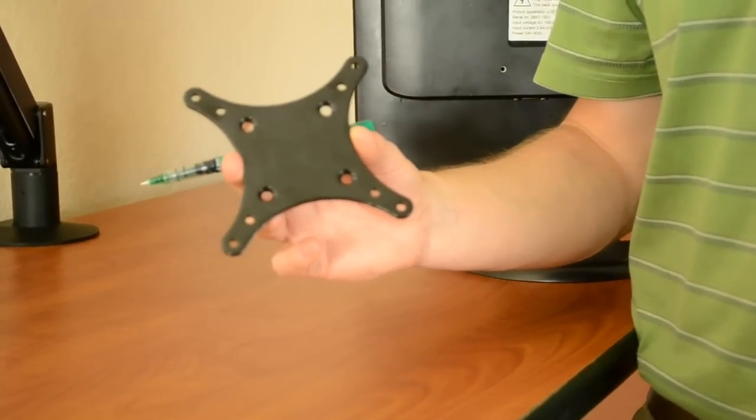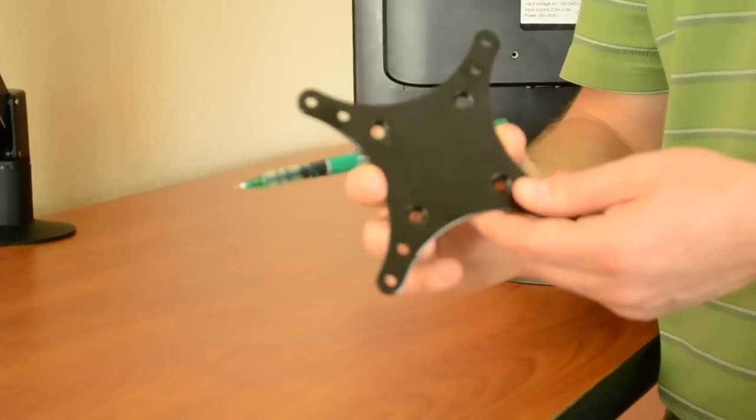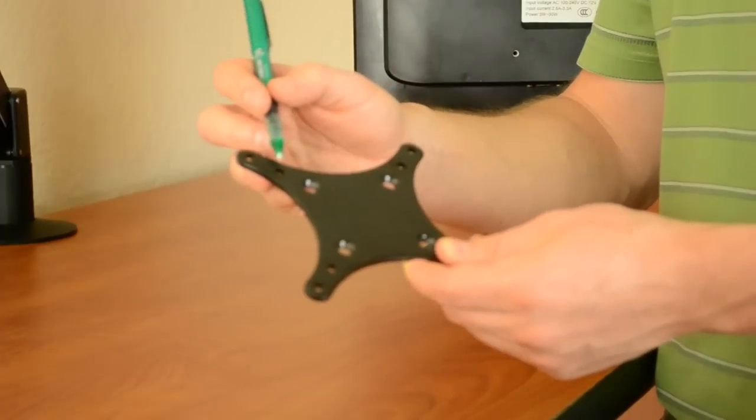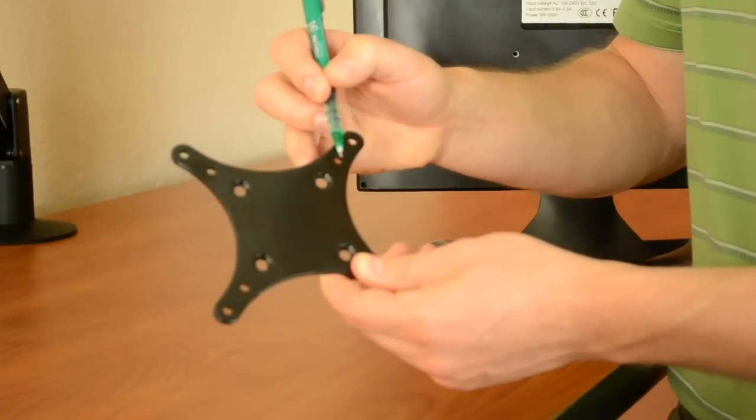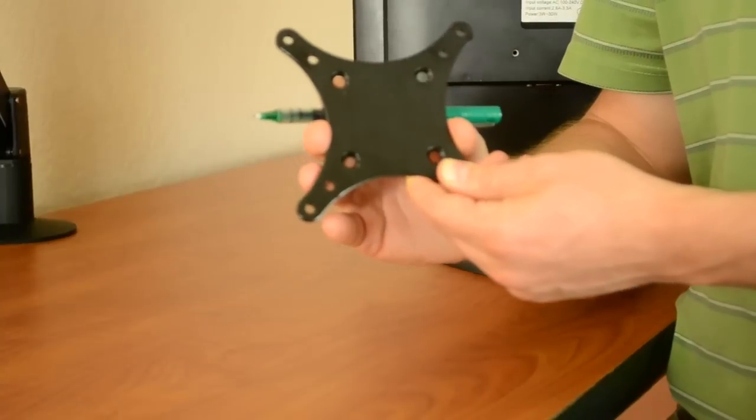Let's look at component two, the star VESA adapter plate. Standard VESA plate hole patterns can range from 75 by 75 or 100 by 100 millimeter spacing.